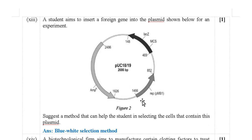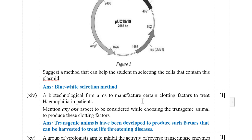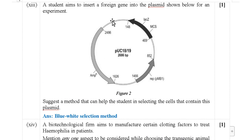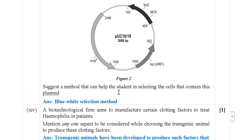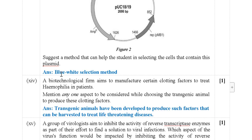Next: A student aims to insert a foreign gene into the plasmid shown. Suggest a method that can help the student in selecting the cells that contain this plasmid. The method is the blue-white selection method.